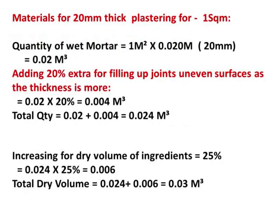Now we are considering 20 mm thick plastering for 1 square meter, calculating the required mortar quantity plus addition for uneven surfaces plus 25% for dry ingredients. The area is 1 square meter, thickness is 20 mm (0.02 meters), so the quantity is 0.02 cubic meters. Here we are adding 20% for covering uneven surfaces instead of 30%, since the thickness is greater.